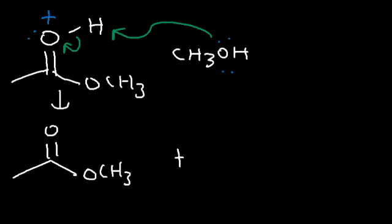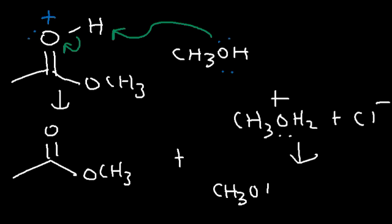And after this absorbs the hydrogen, this is going to be in the form of CH3OH2+, which is the equivalent of methanol plus HCl. So we've regenerated the HCl. Therefore, HCl is the acid catalyst, since it was not consumed in the reaction. So that's it for the Fischer esterification mechanism reaction.